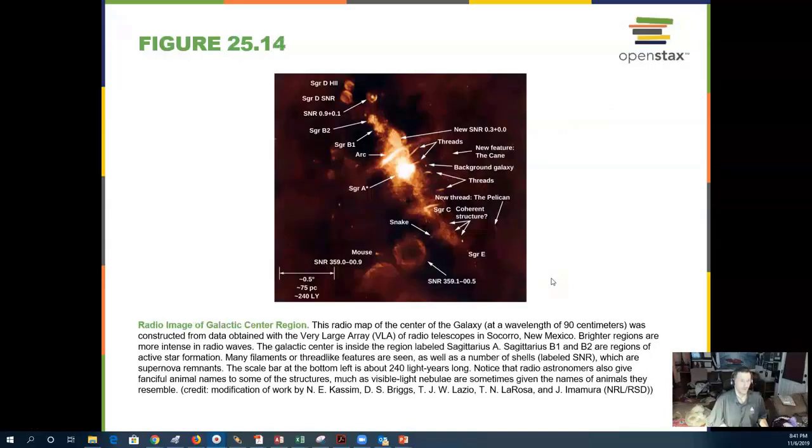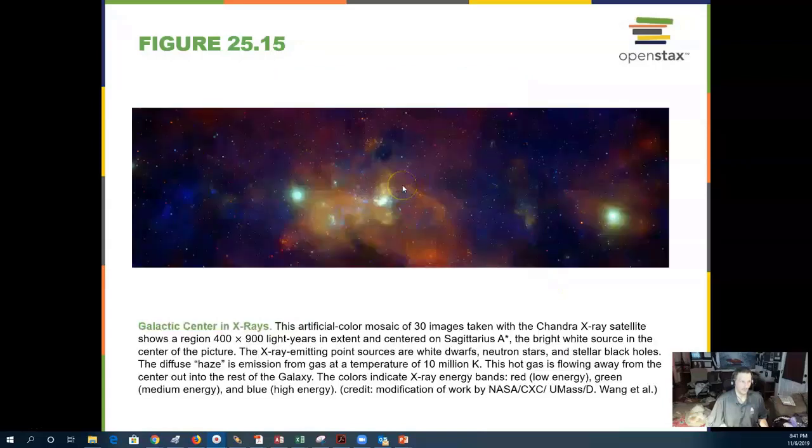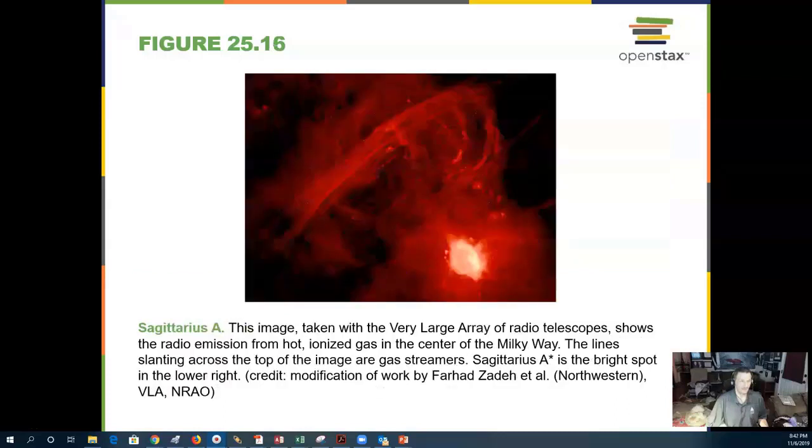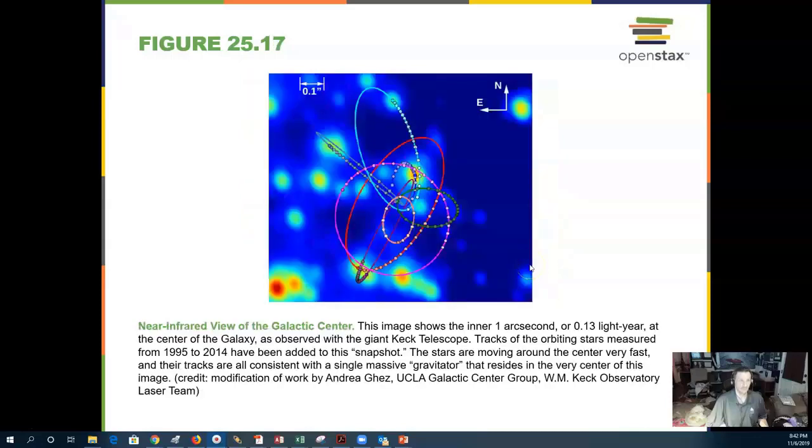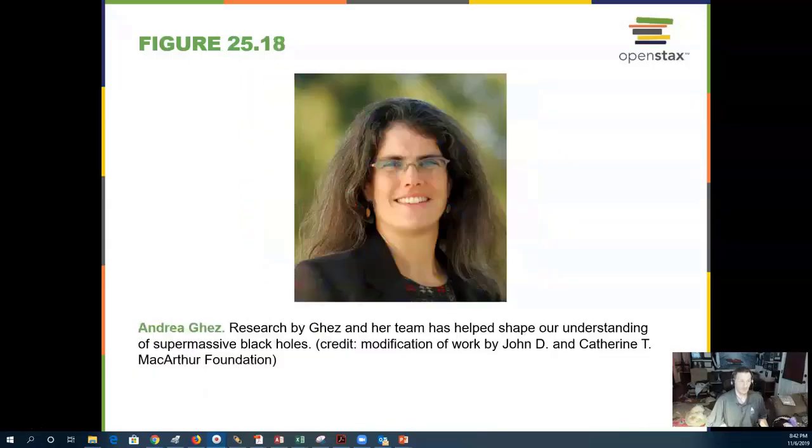We can look at different parts of the galaxy in the radio, in X-rays. This radio image of the galactic center shows Sagittarius A and Sagittarius A star. A near infrared view, and Dr. Andrea Ghez, who looks at supermassive black holes.